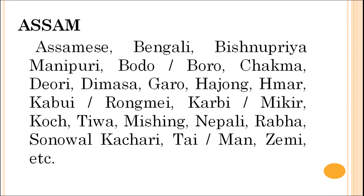Some examples from Assam: we have a scheduled language Assamese, then Bengali, Vishnupriya Manipuri, Bodo, Chakma, Devuri, Dimasa, Garo, Hajong, Mara, Kabui (Rongmai), Karbi (Mikir), Koch, Tiwa, Mishing, Nepali, Rabha, Sonowal Kachari, Tai (Man), Jemi, etc.